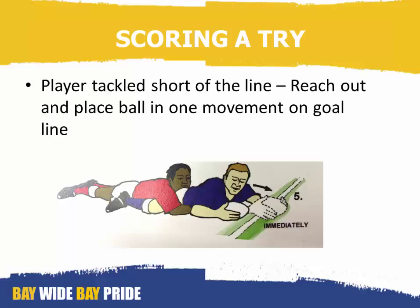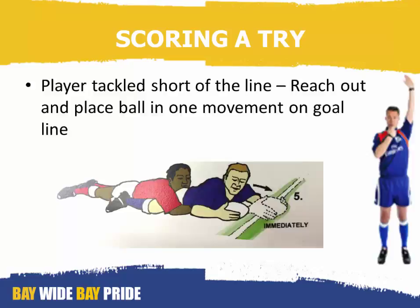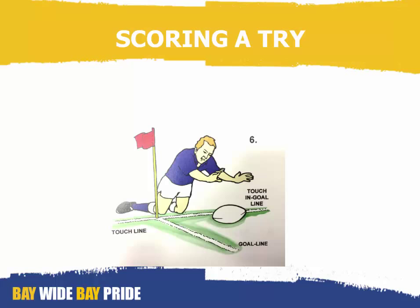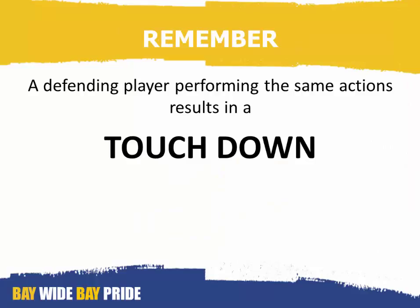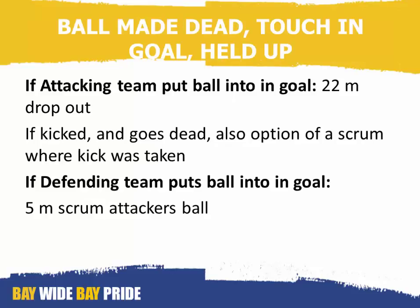Where a player is tackled short of the line and can reach out and place the ball in one movement on the goal line, that's a try. Where a player is in touch or touch-in-goal and not carrying the ball, they can reach out and ground the ball and score a try. Remembering that if a defending player performs any of those same actions, it results in a touchdown, ball made dead, touch-in-goal, or held up.